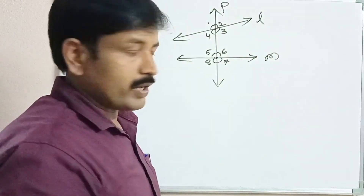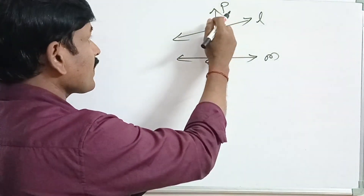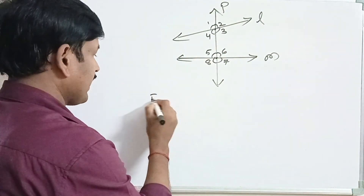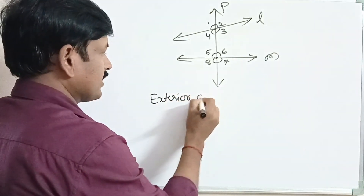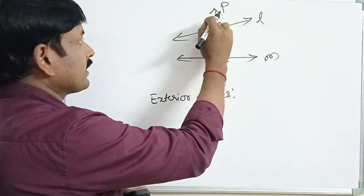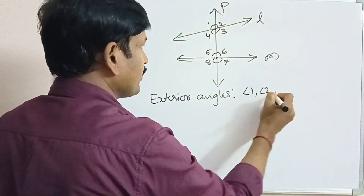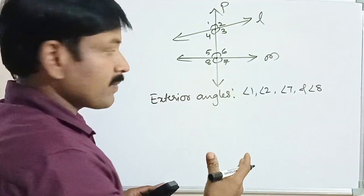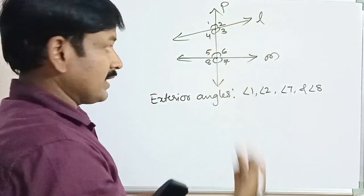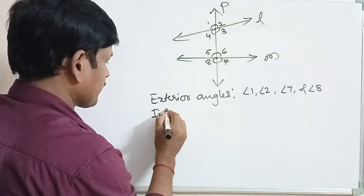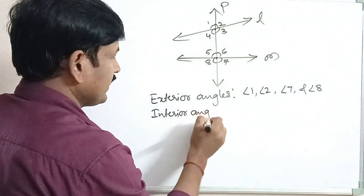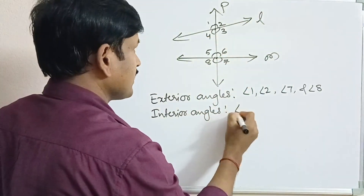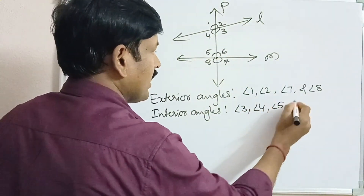Now, angle 1, angle 2, angle 7, and angle 8 are exterior angles — they are outside the two lines. Next, interior angles: angle 3, angle 4, angle 5, and angle 6 are interior angles.